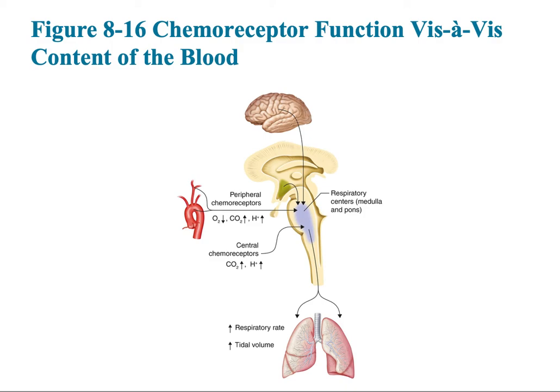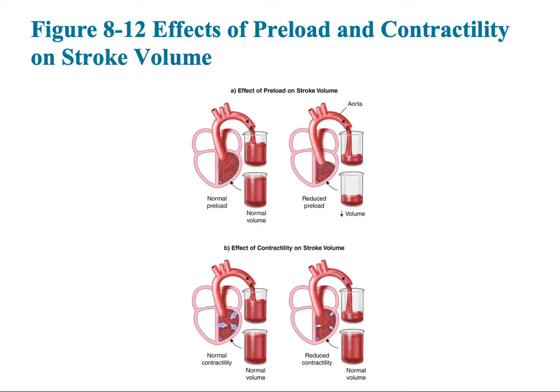Cardiac output is an equation: heart rate — the number of times the heart beats per minute — multiplied by stroke volume. Stroke volume is the amount of blood the ventricle squeezes out each beat — 70 cc ejected from the left ventricle per contraction. With a normal heart rate of 70, 70 times 70 gives approximately 4,900 mL, or 4.9 liters, circulated throughout the body in about one minute.